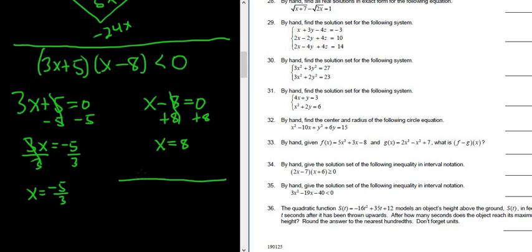So next, you put these on a number line. So here's negative 5 thirds, and then here's 8. Okay, so you set each piece equal to 0, you get two answers, and you put them on a number line.